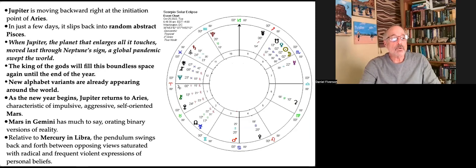Jupiter is moving backward, right at the initiation point of Aries. In just a few days, it slips back into random abstract Pisces. When Jupiter, the planet that enlarges all that it touches, moved through Neptune's sign last, a global pandemic swept the world. Right now, a whole new series of alphabet variants are emerging around the world as Jupiter prepares to re-enter Pisces.